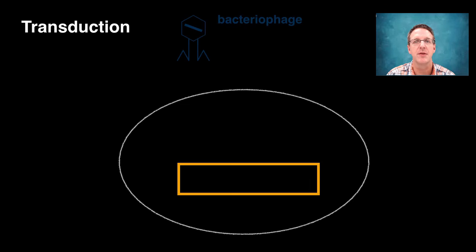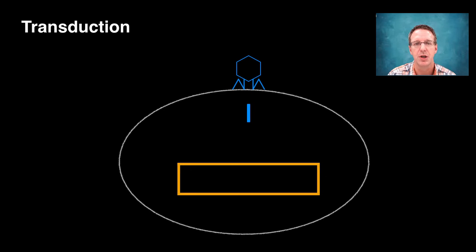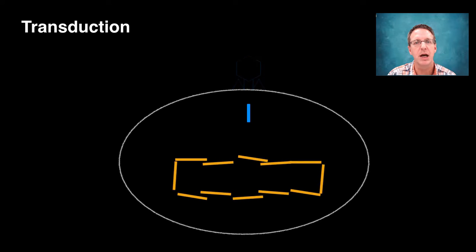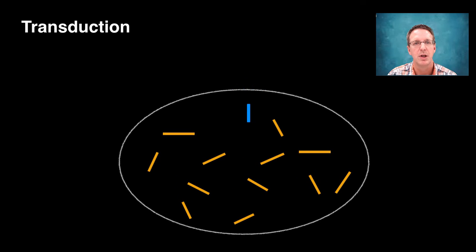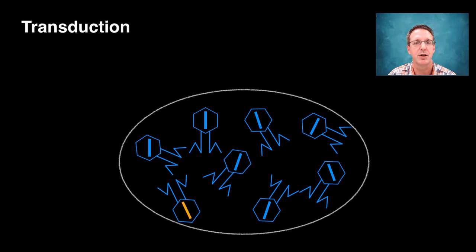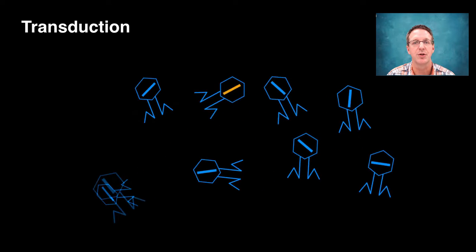So the next mechanism involves bacteriophages, which are viruses that infect bacteria by injecting their DNA into the cytoplasm of that bacteria. Now, once in there, the hostile takeover begins. And this involves the breaking down of the bacterial chromosome, the replication of the viral genome, the production of new viral proteins by the host's cellular machinery, and the assembly of new viral particles. And finally, the bursting of the bacteria to release the new viruses.